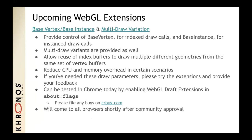Another pair of interesting extensions are the base vertex base instance extension and the multi-draw variation. These finally provide WebGL control over the base vertex parameter for indexed draw calls and the base instance parameter for instanced draw calls. They let you reuse index buffers to draw multiple geometries from the same set of vertex buffers, reducing CPU and memory overhead. We just had a discussion on the WebGL dev list about a Minecraft clone that absolutely needs these for efficient rendering. These can be tested in Chrome today by enabling draft extensions in About Flags.